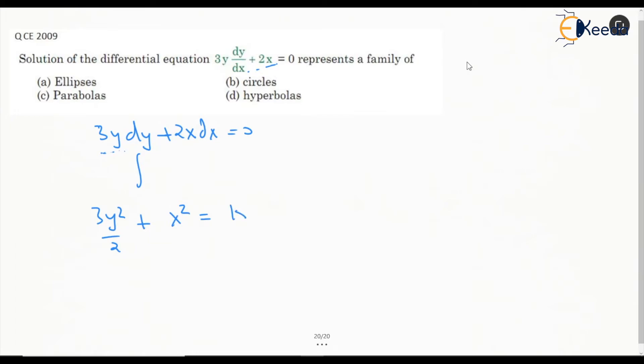So this is going to be 3y² + 2x² = some constant c. Instead of 2k, we can write another constant as c.